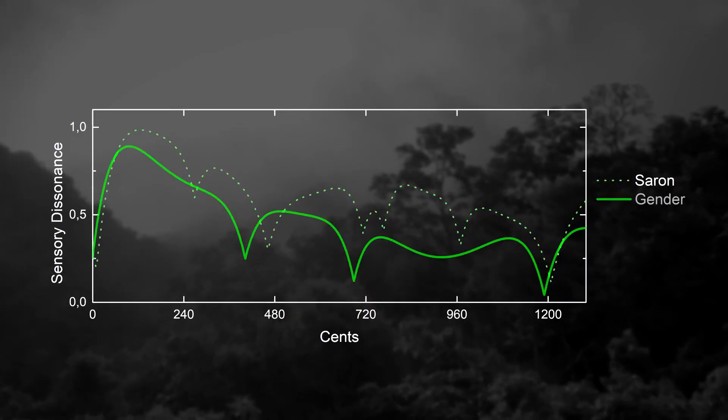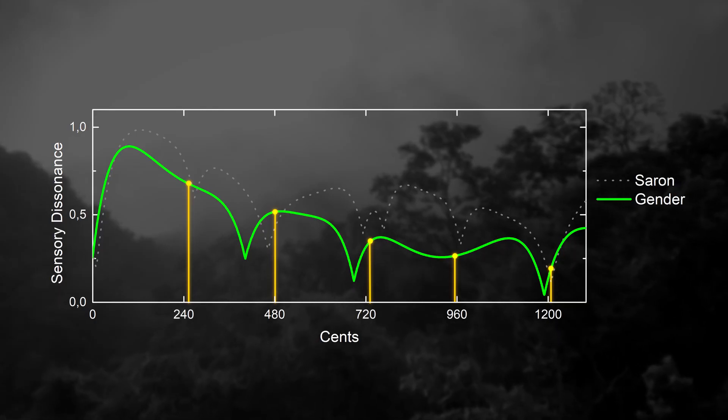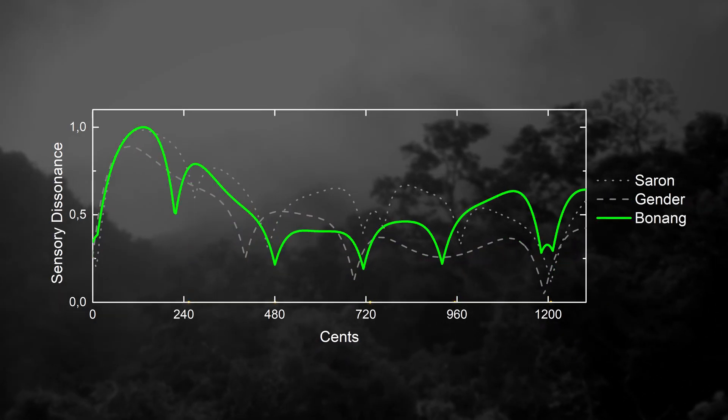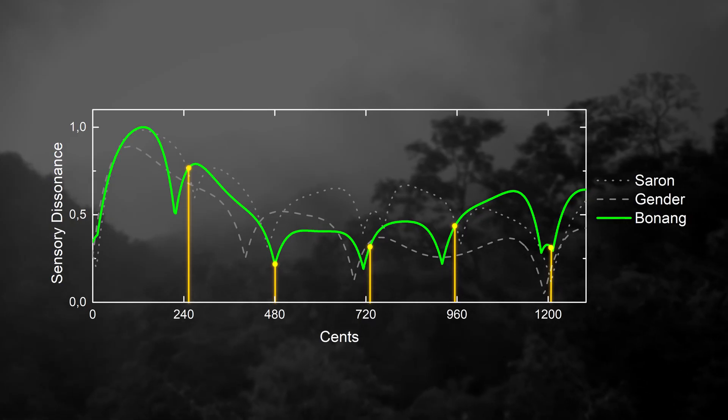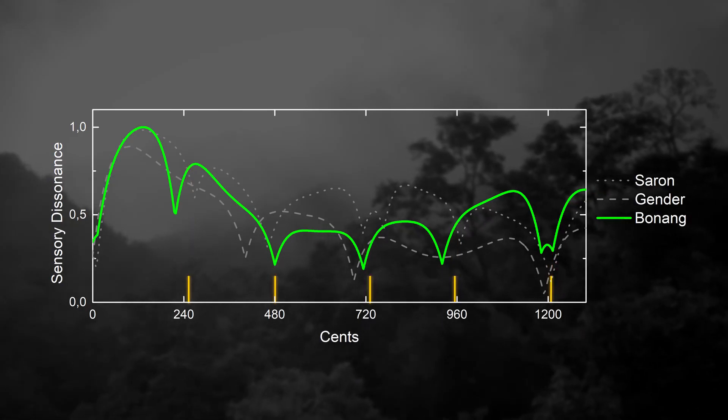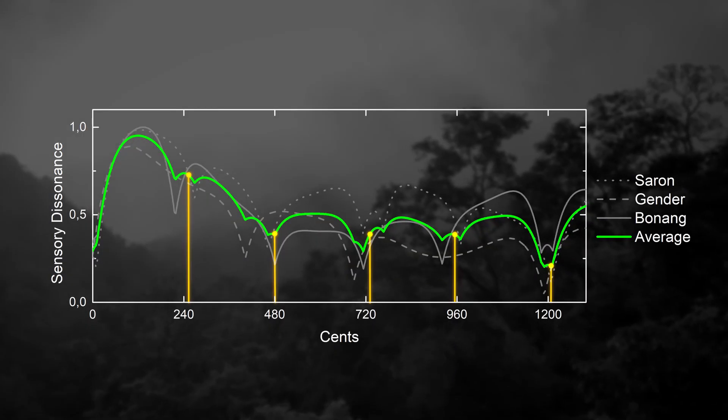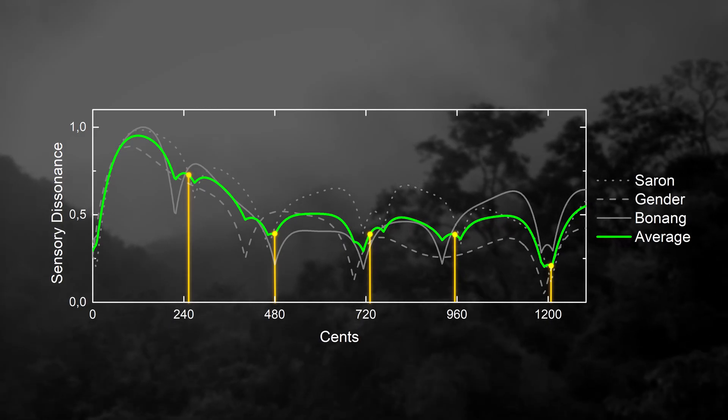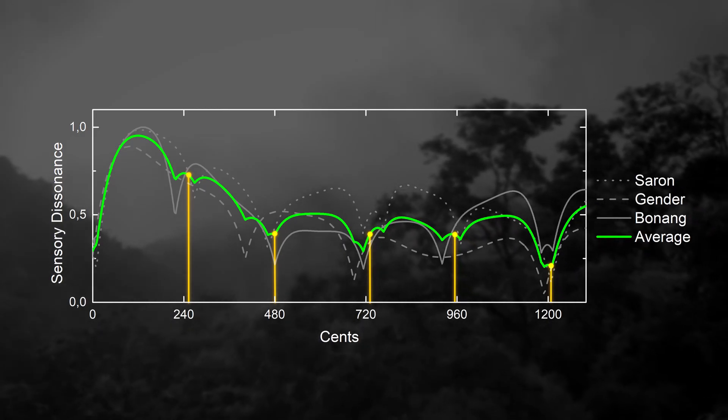Same thing can be done for Gender and Bonang. Different instruments give different dissonance curves, but with dips roughly at the same place. Averaging between all dissonance curves, we clearly see that it corresponds well to the notes of slendro tuning.